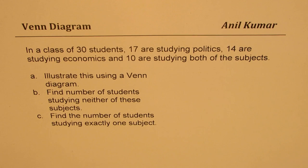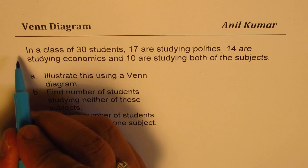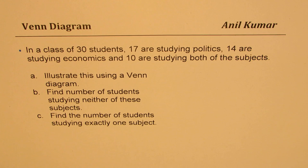I'm Anil Kumar sharing with you a question based on Venn diagram. The question here is, in a class of 30 students, 17 are studying politics, 14 are studying economics, and 10 are studying both of the subjects. Illustrate this using a Venn diagram. Find number of students studying neither of these subjects. Find the number of students studying exactly one subject.